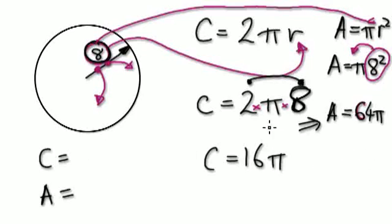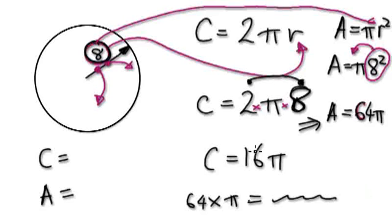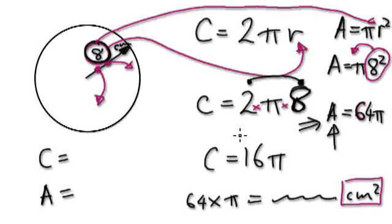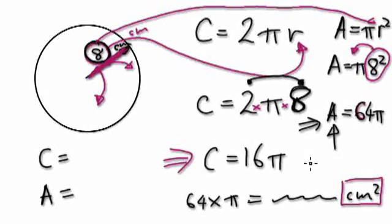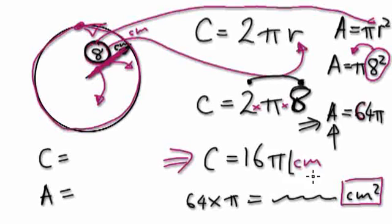You can just leave it as 64 pi, or if they're asking you for the exact decimal value, get a calculator, punch in 64 times pi, and it will give you a number. If you're given 8 centimeters, then the area answer would be in centimeters squared. The circumference, however, is a length — it's like a string — so its unit is centimeters, not centimeters squared. So the unit for the circumference would be centimeters, whereas for the area it would be centimeters squared.